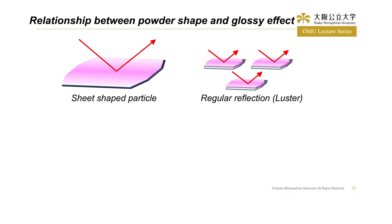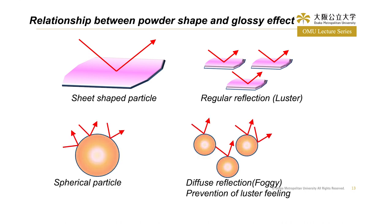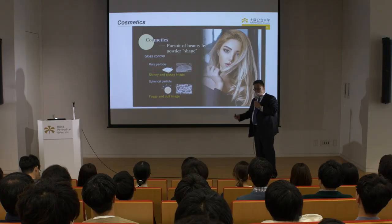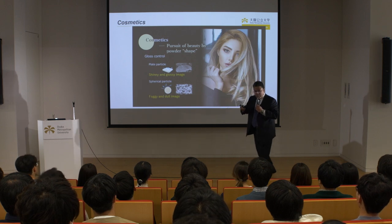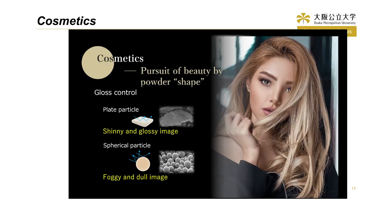When we look at the shape of the powders, it is very interesting. If we use a sheet-shaped particle, we have regular reflection — this causes a luster effect. However, if we use spherical particles, light reflection produces diffuse reflection and gives a foggy image. So what I want to say is: don't use flat sheet-shaped powder for your forehead, otherwise it's too bright. You are better off using spherical particles for your forehead.